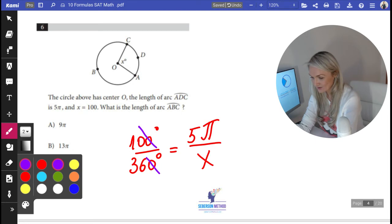So now I have 10 over 36 is equal to 5π over X. Now cross multiply, I'm going to have 10X, degrees cancel out as well. So 10X is equal to 5π times 36.